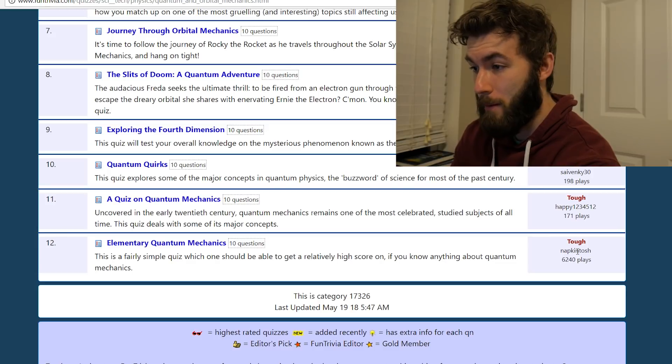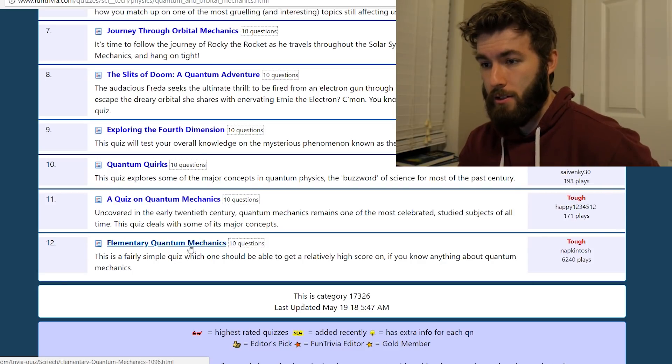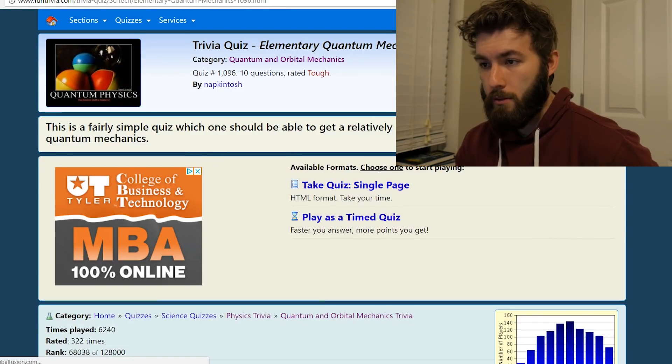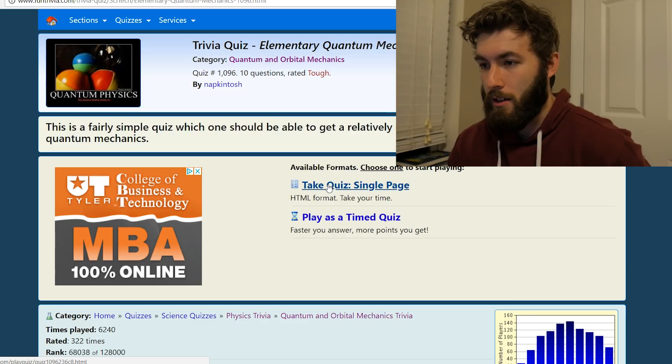We're getting started with the tough one because it has the most plays it looks like. So let's do this. Elementary quantum mechanics. Feel free to take this for yourself. I'll leave a link to this website in the description. Let's get started. Yeah, let's do the single page quiz. It gives you an option to do like a timed quiz but that sounds stressful. I already took the physics GRE.